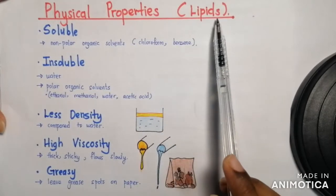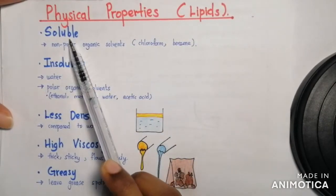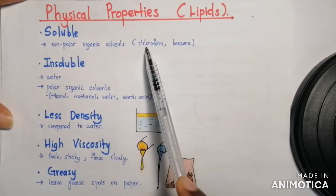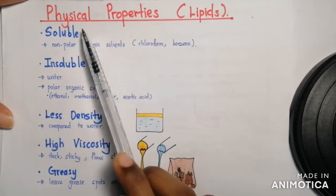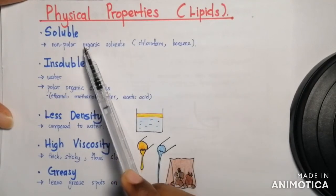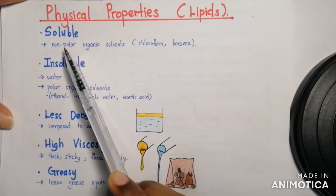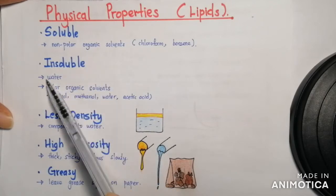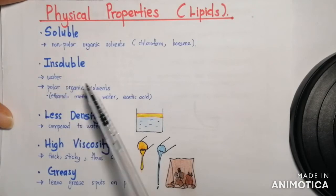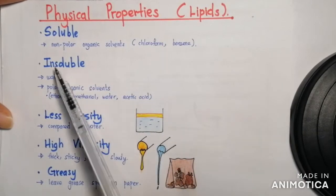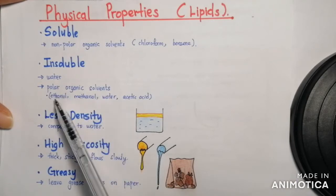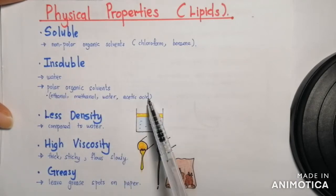The physical properties of lipids: they are soluble in non-polar organic solvents, such as chloroform and benzene, because lipids itself is a non-polar molecule. Therefore, it will be insoluble in water, which is a polar molecule, and also insoluble in other polar organic solvents such as ethanol, methanol, and acetic acid.